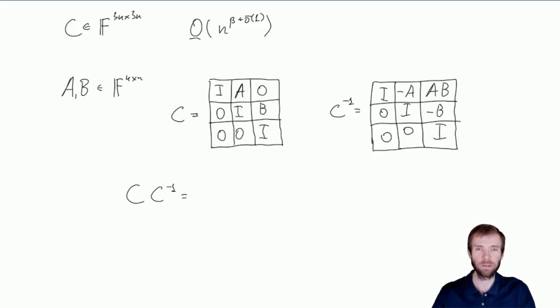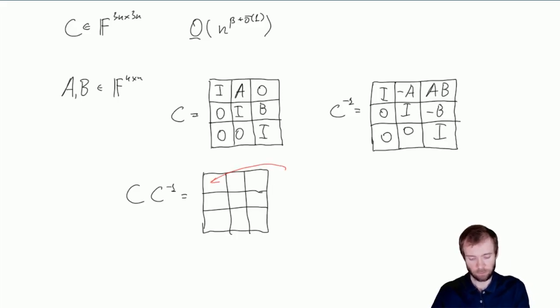And indeed we can check that C times C inverse is indeed an identity matrix. And when we are dealing with these kind of block matrices, we can do it by multiplying blocks. So C times C inverse is a matrix which is decomposable into blocks. And for instance, here we would have identity times identity plus A times 0 plus 0 times 0, so we have identity here.